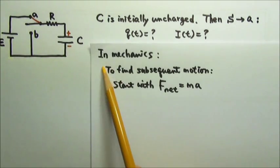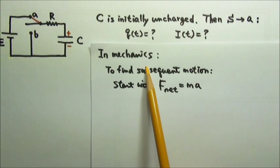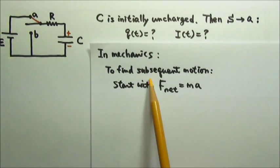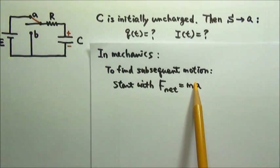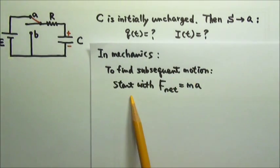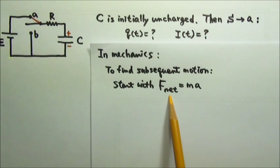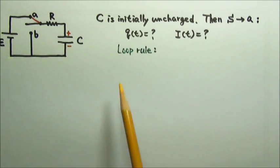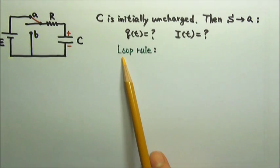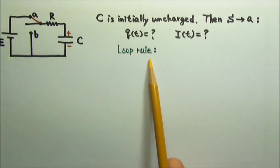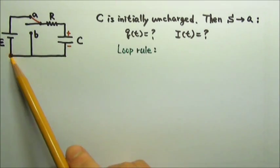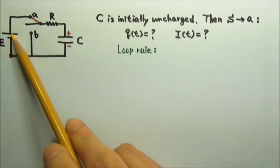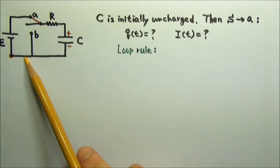In mechanics, if we wish to find the subsequent motion of an object, we would start with the net force equals MA. In circuits, we would start with the loop rule. Let's start here and go clockwise.